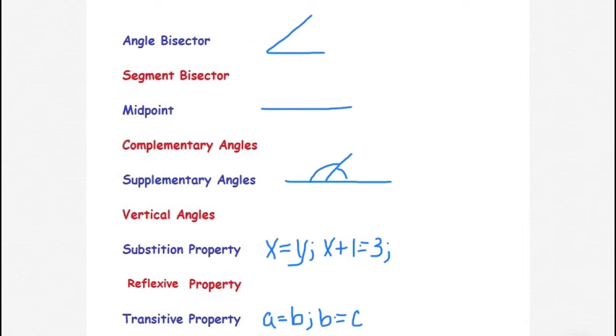The angle bisector means you have an angle and it is going to be split in two evenly. That means this angle is congruent to this angle. They measure the same.